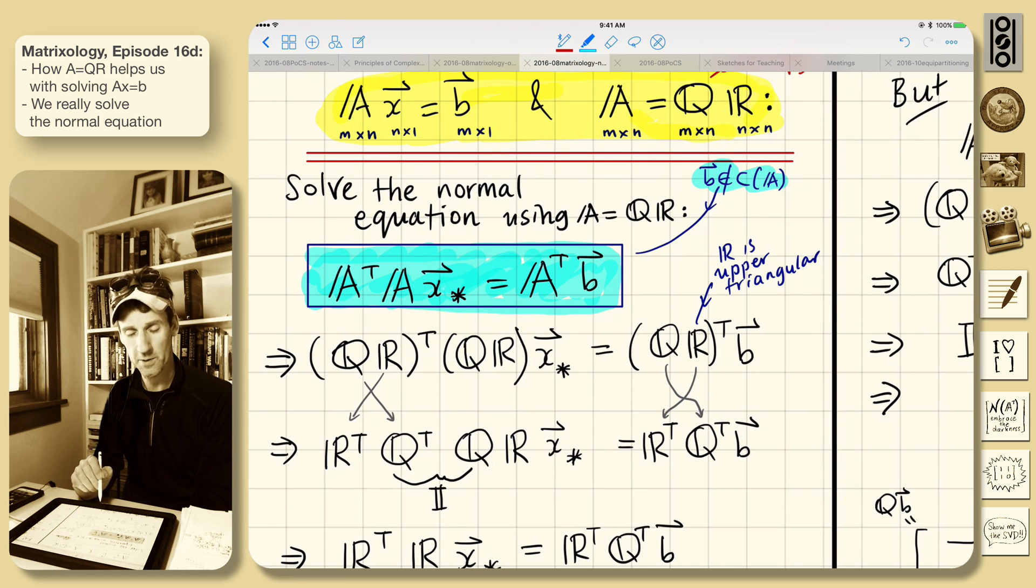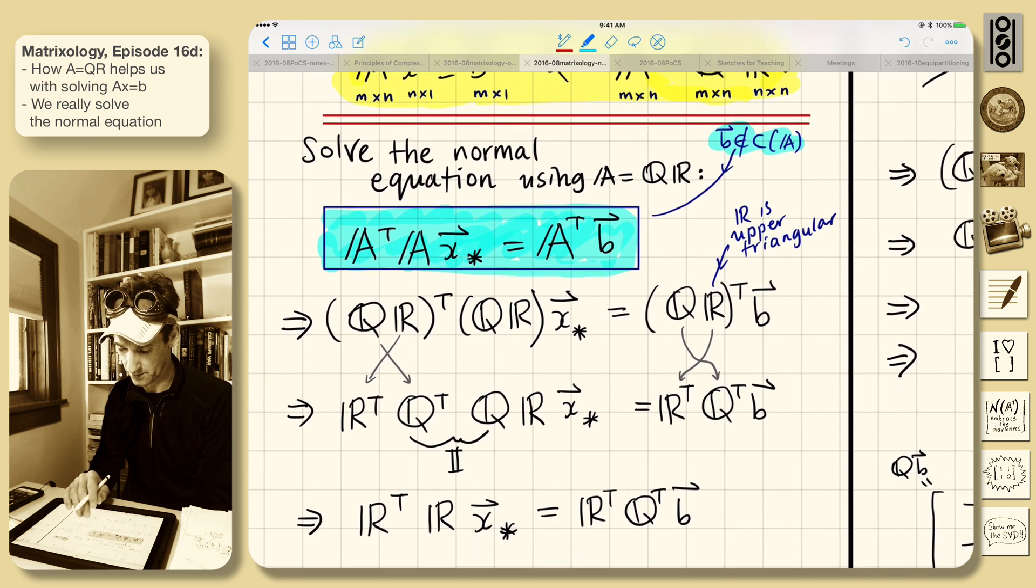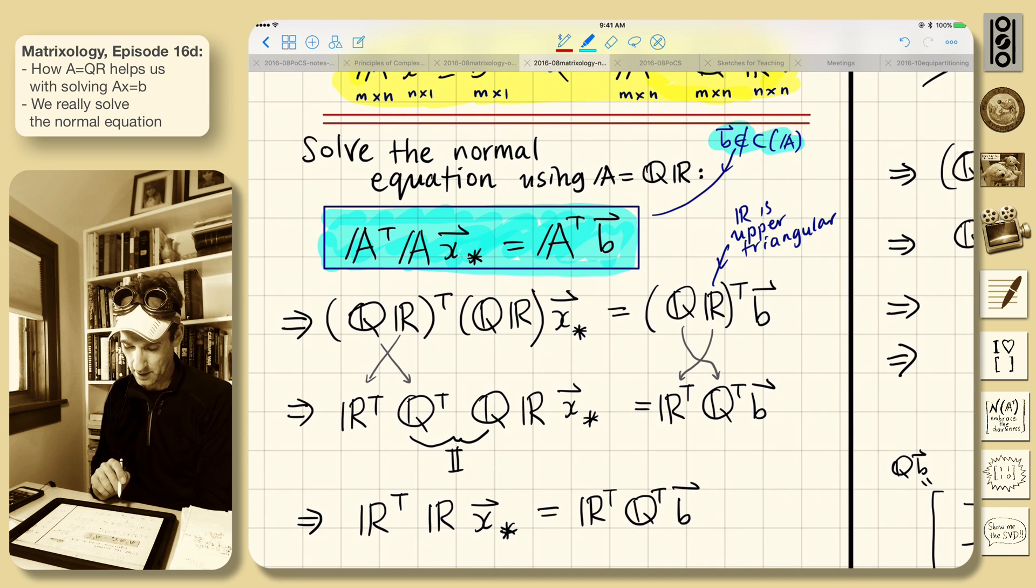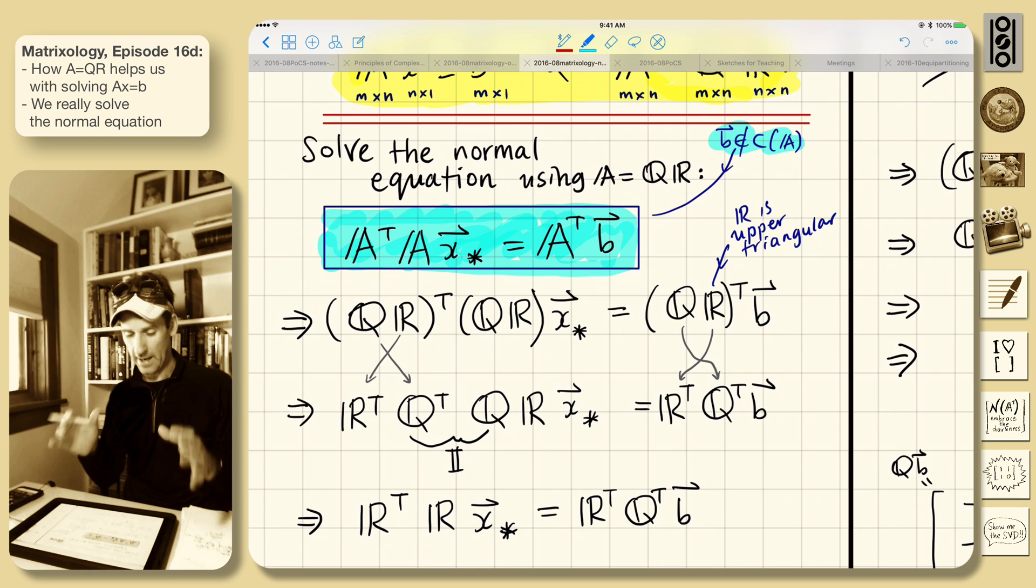All right. So the idea is here. B is not an element of the column space of A. That's when we use this. It could be, but that's what we're worried about here.